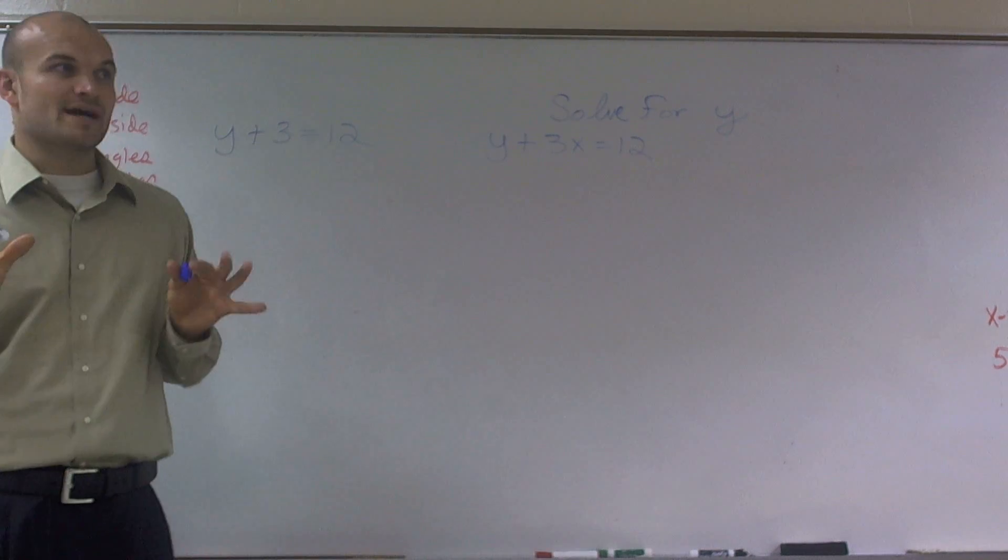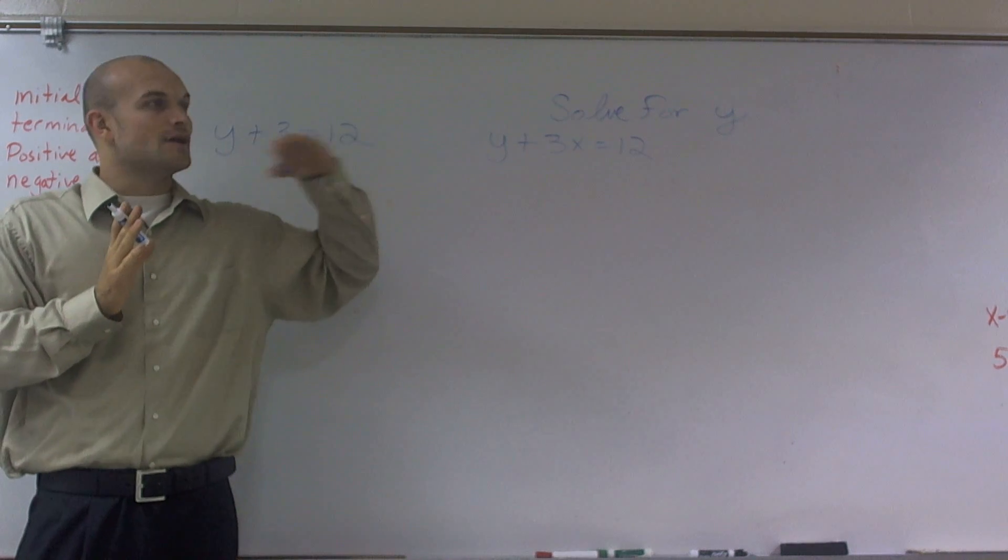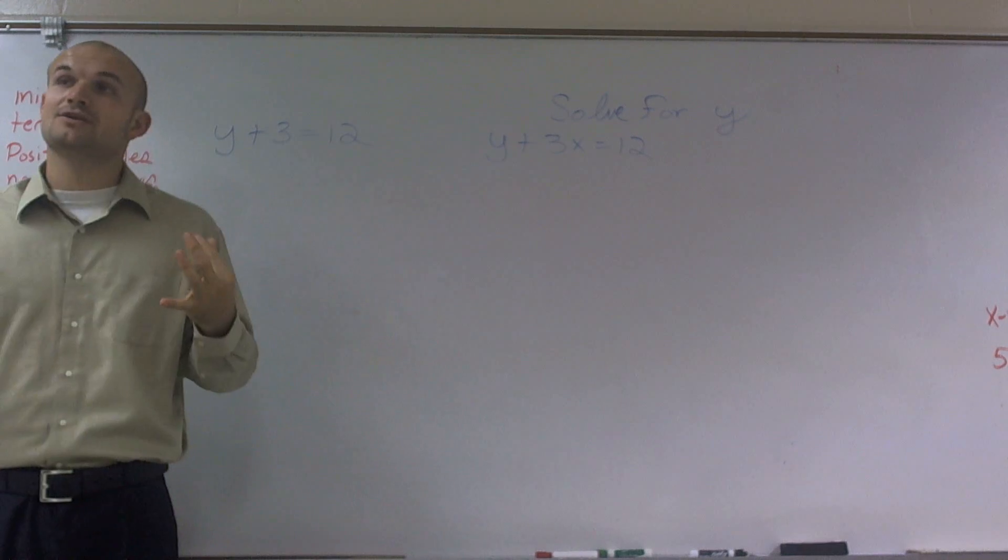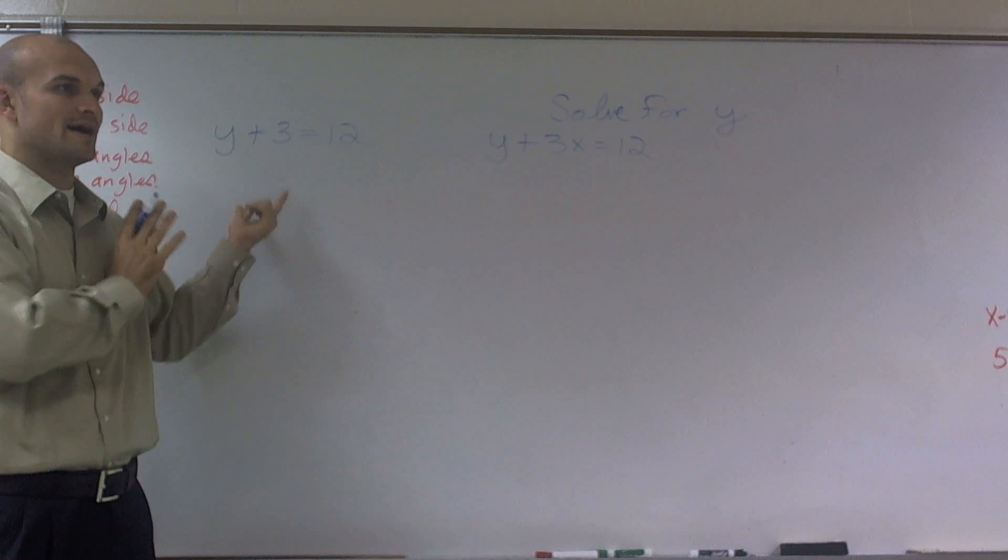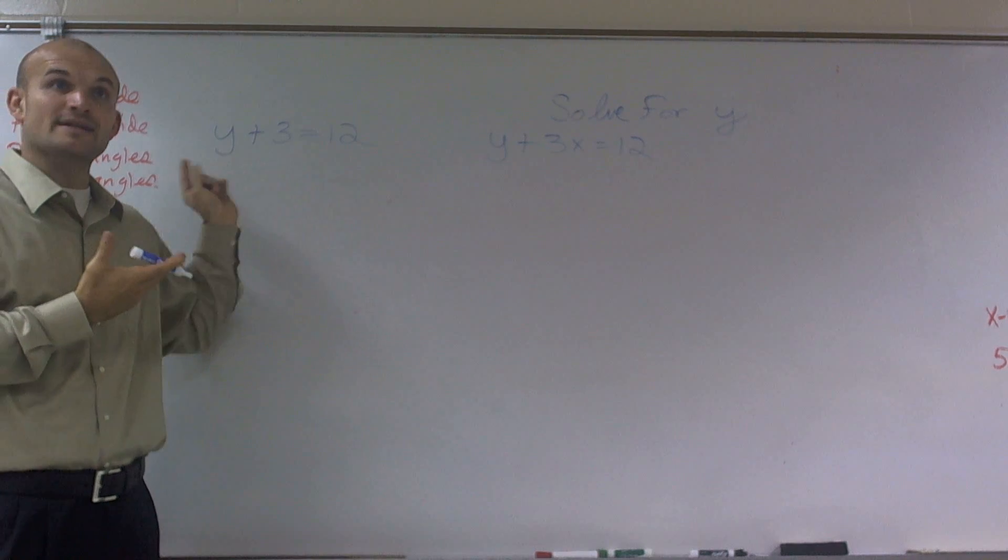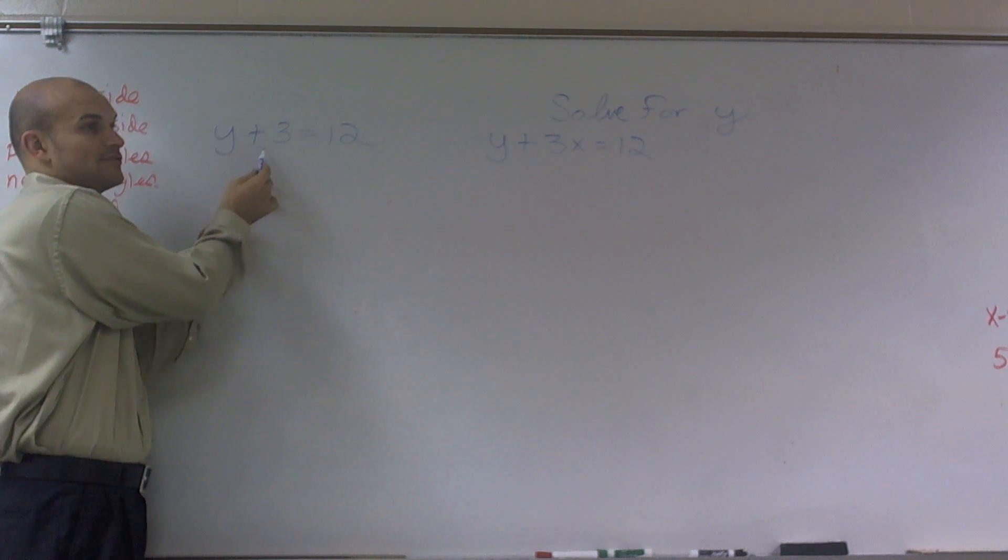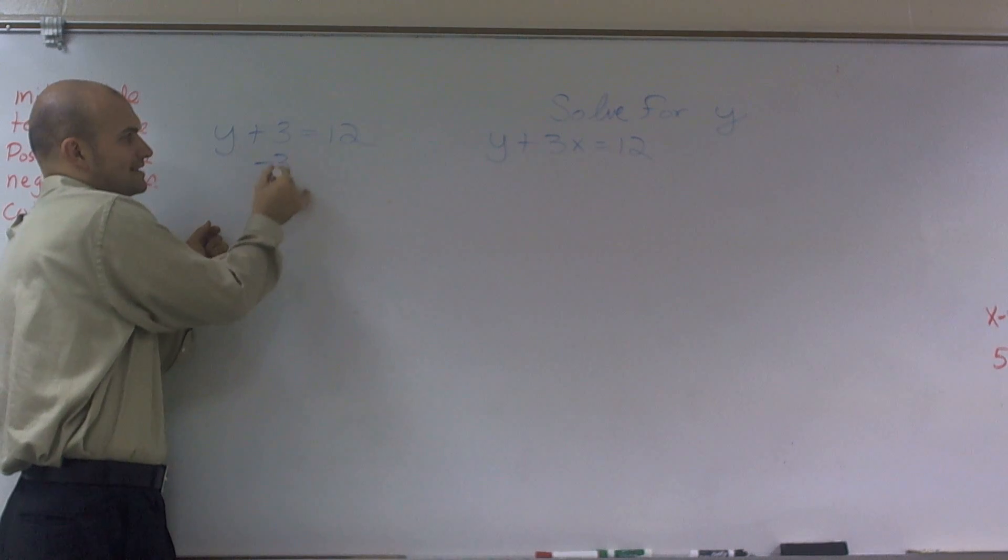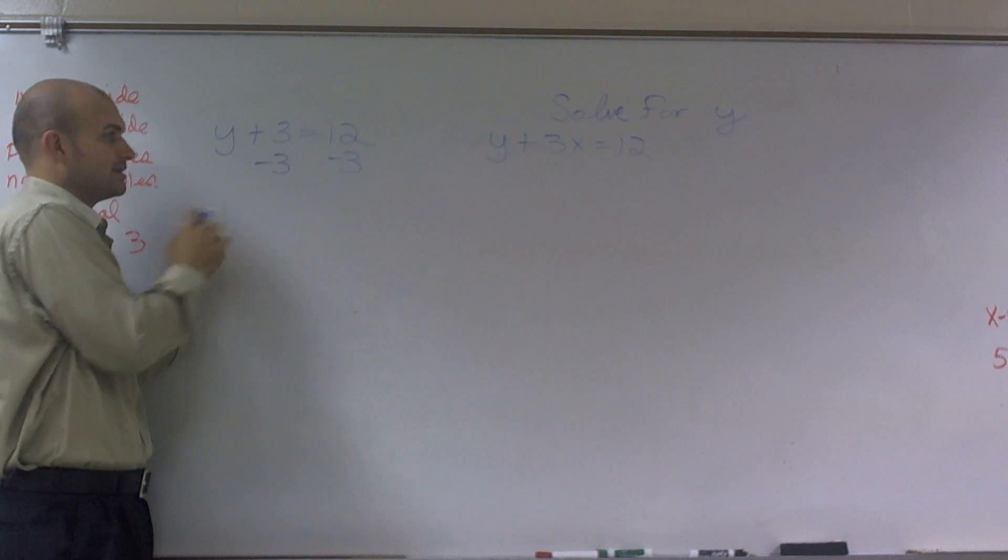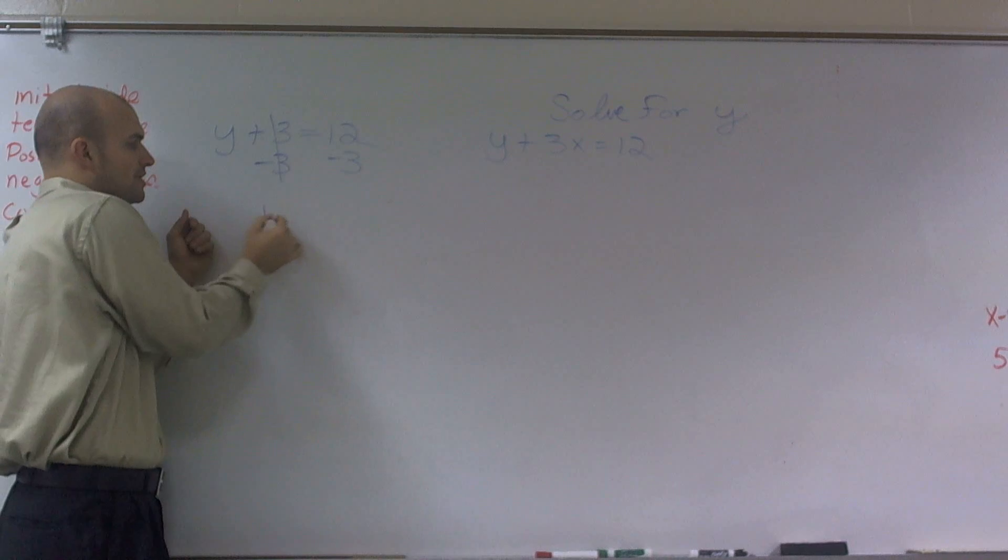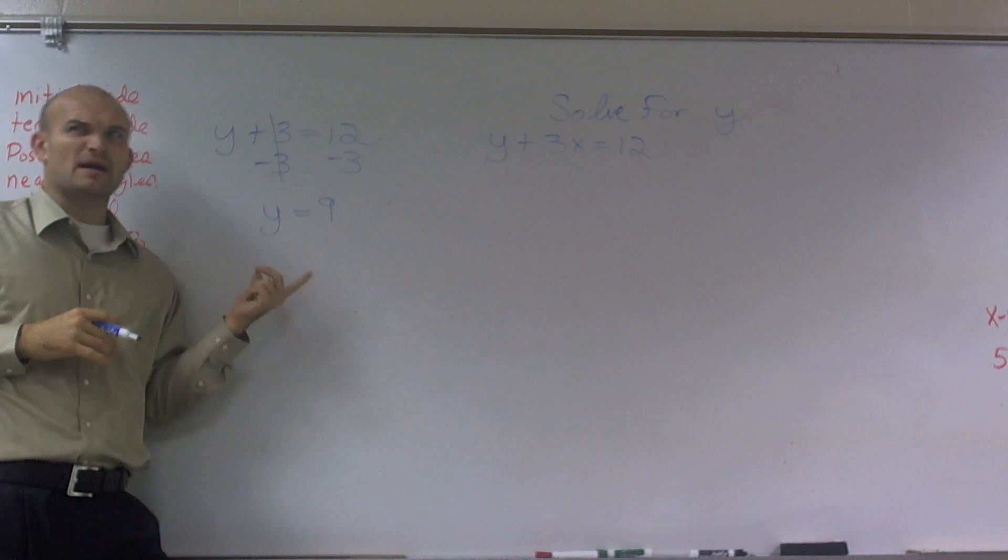So there's a couple things we need to remember, because we're going to keep getting harder and harder problems. When you have y plus 3 equals 12, remember when I say solve for y, we want to get our variable by itself. So I need to undo what's happening with my y. So I have a y plus 3, to get rid of that 3, I can subtract it on both sides using what we call a subtraction property of equality. So that cancels out to give me 0. So I have y equals 9. It's about as basic as we got, right?